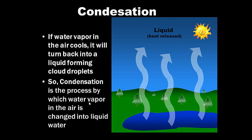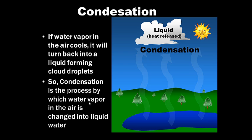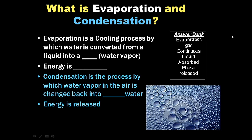If water vapor in the air cools, it will turn back into a liquid forming cloud droplets. Condensation is the process by which water vapor in the air is changed into liquid water. Notice we've gone from liquid down here where the lake is to gas, water vapor, and then back up here into the water phase, the liquid phase. Water droplets. Clouds are water droplets. Condensation is occurring up here where clouds are forming. We're cooling the air and making water droplets. Heat is released. What is evaporation and condensation for your notes? Question on the left-hand side, answer on the right-hand side. Use the answer bank to determine which words best complete the sentence. Go ahead and pause this while you write.